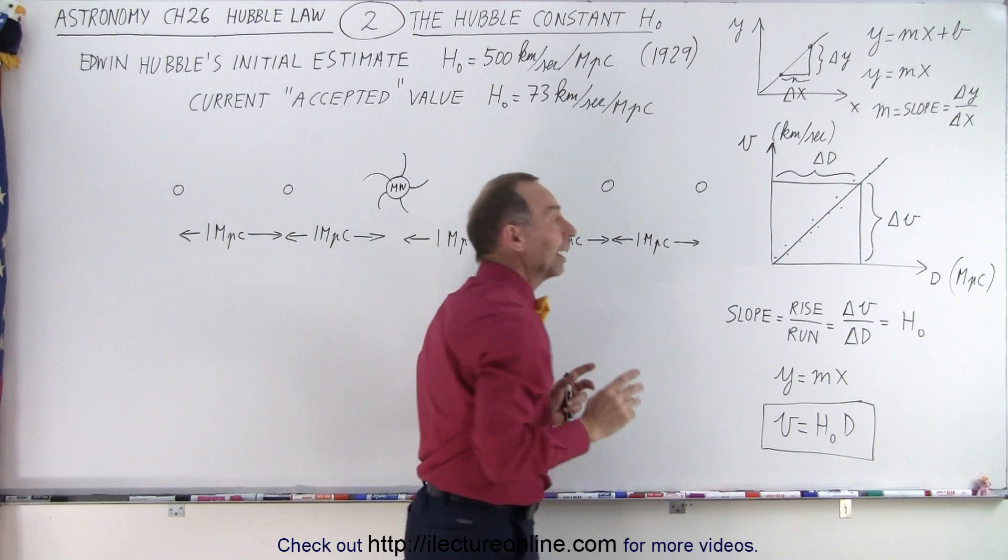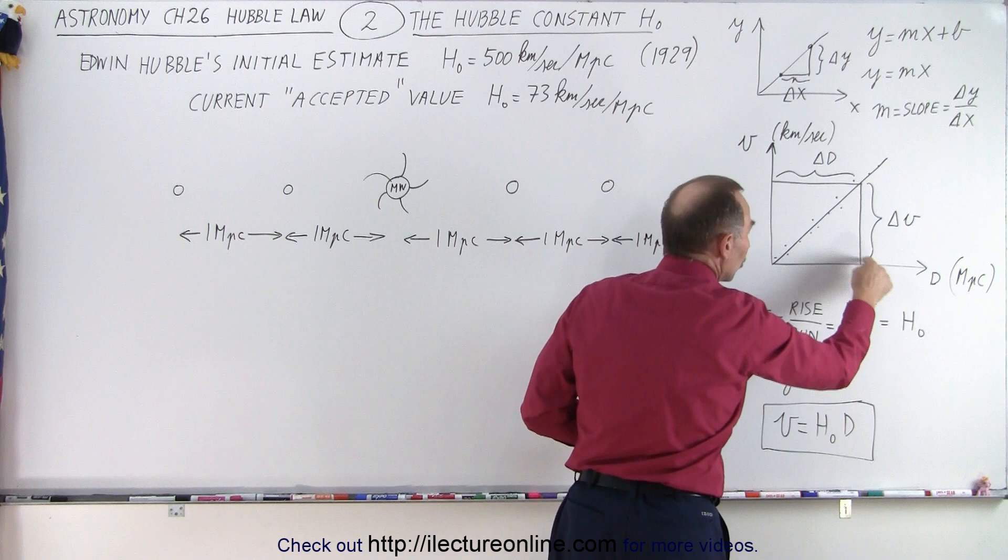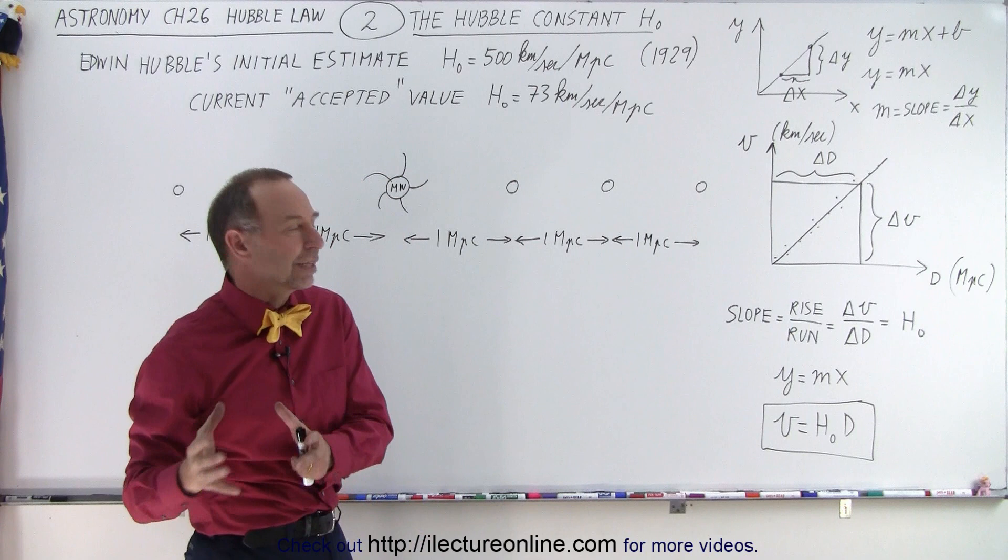And so that means that if we know the accurate value of that slope, all we need to do is measure the recessional velocity which can be easily done by measuring the redshift, and from that we can then easily determine the distance of that particular galaxy.